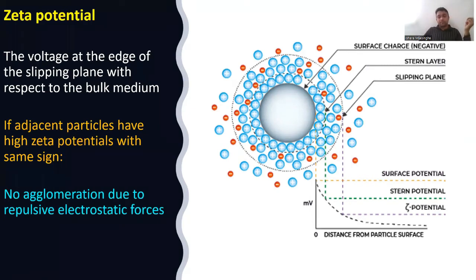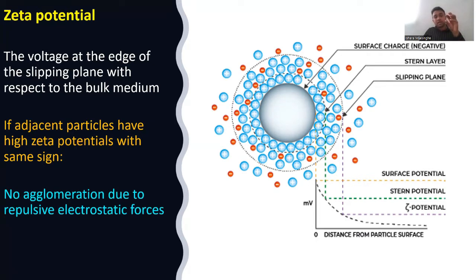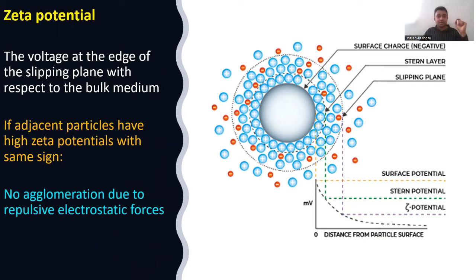The zeta potential is measured at the slipping plane. It is important for defining the stability of a colloidal system. Knowing the surface charge alone is not sufficient — we need to know the potential at the slipping plane, because when a particle moves, its adjacent charge layers move with it. The relevant entity is the particle plus its charge layers, not the bare particle alone.